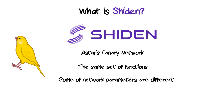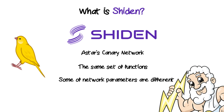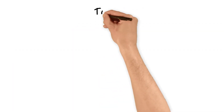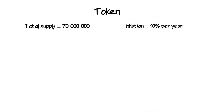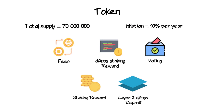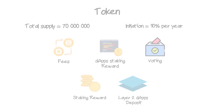Unlike test networks, canary networks have a real economic component that permits testing in real conditions. ASTR (Astar's native token) and SDN (Shiden's native token) share the same use cases and parameters. The initial total token supply is 70 million tokens with an annual inflation of 10%. Tokens are used for fee payments, transfers within the network, rewards to smart contract developers via the dApp staking mechanism, staking rewards for ordinary users, on-chain voting participation, and developers must deposit ASTR or SDN to launch applications on the second-layer network.